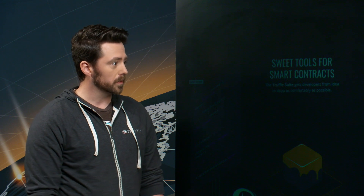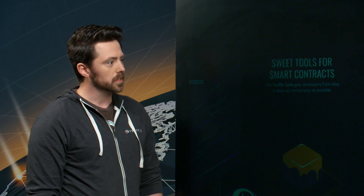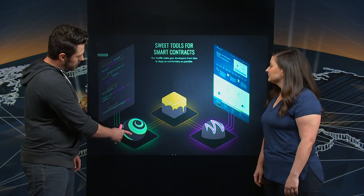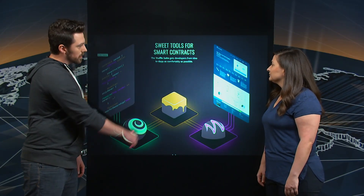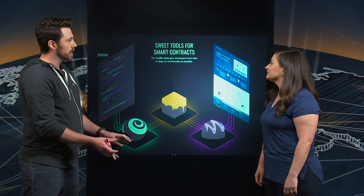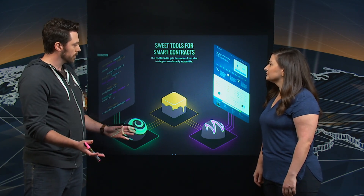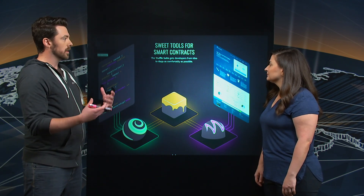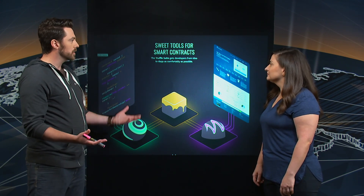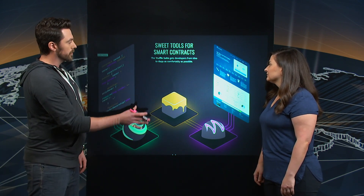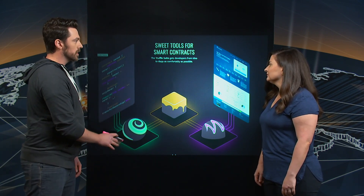Truffle is a suite of tools for building blockchain and smart contract applications. The suite consists of three tools: Truffle, which helps manage the workflow around building smart contract applications; Ganache, which is a blockchain simulator that looks, feels, and acts like a blockchain; and Drizzle, which helps connect your front end to the blockchain application you're making.